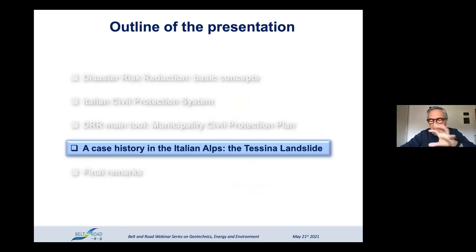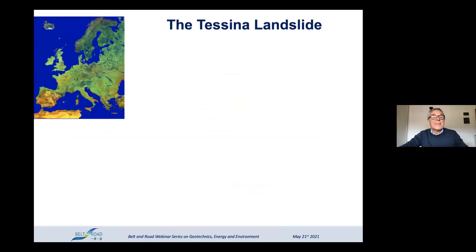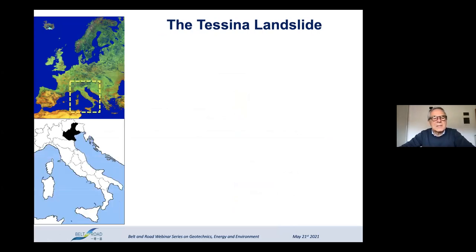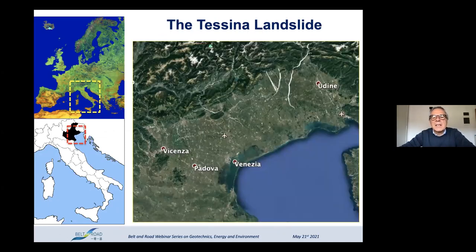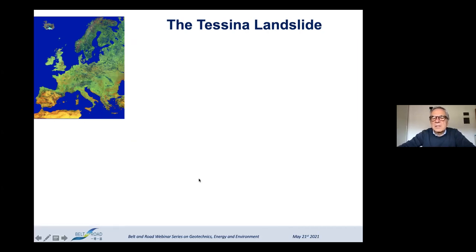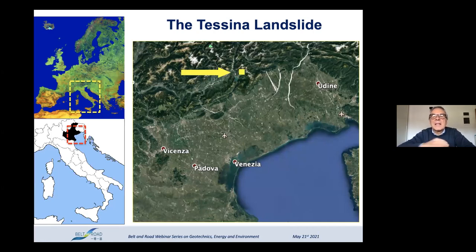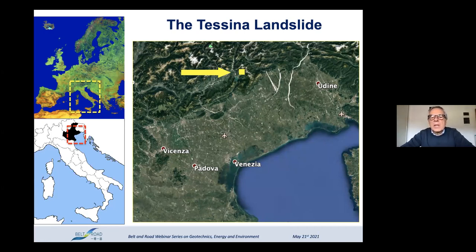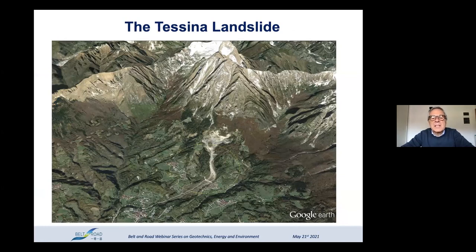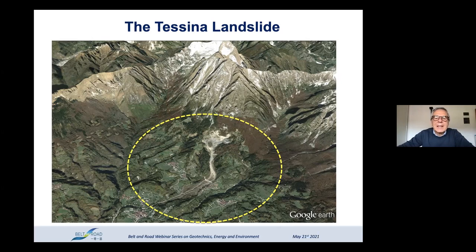The last part of the presentation concerns the Tessina landslide. Our home region is Veneto in northeastern Italy, close to the borders with Austria, Slovenia, and Croatia — near Venice and our hometown of Padua. The Tessina is a complex landslide characterized by roto-translational movement in the source area, transitioning into earth flow and mud flow along the channel. There are two villages very close to the area affected by the landslide that could be severely damaged.